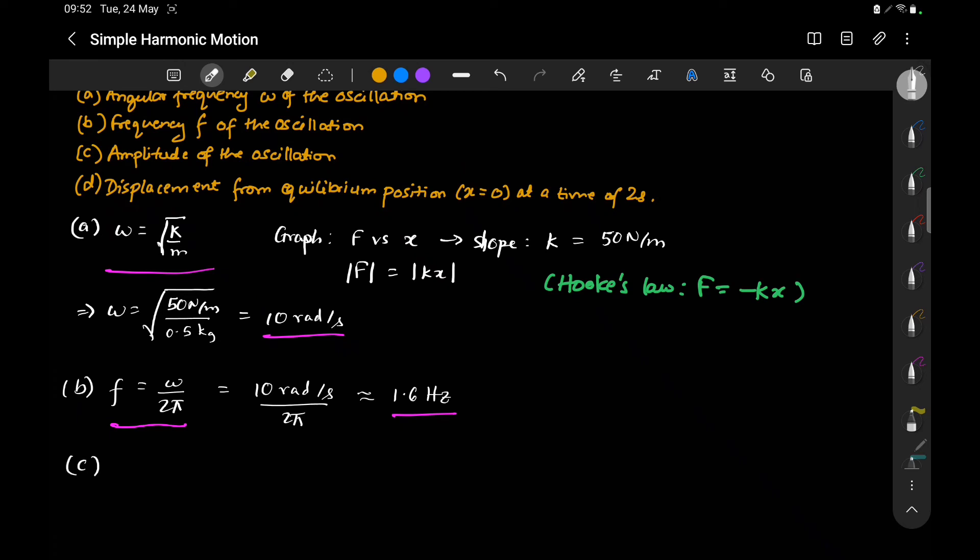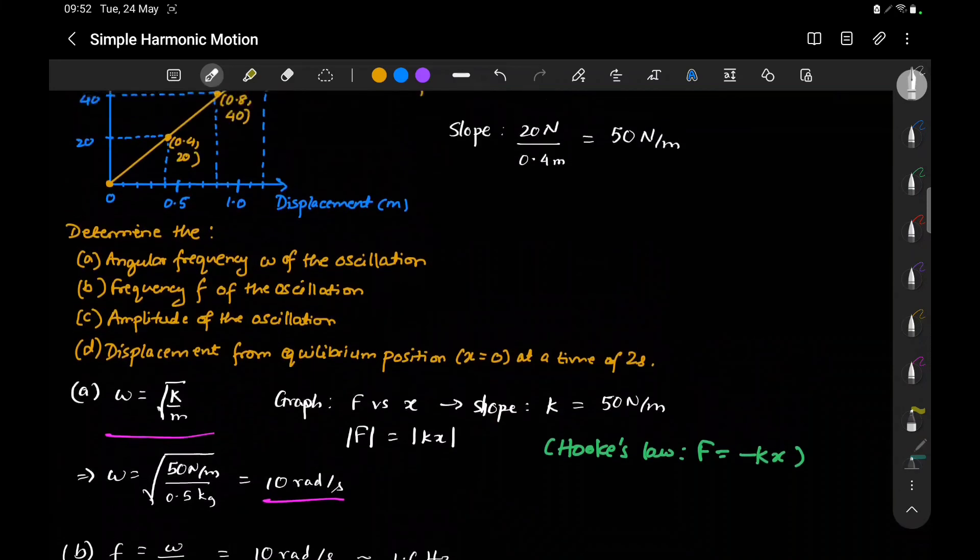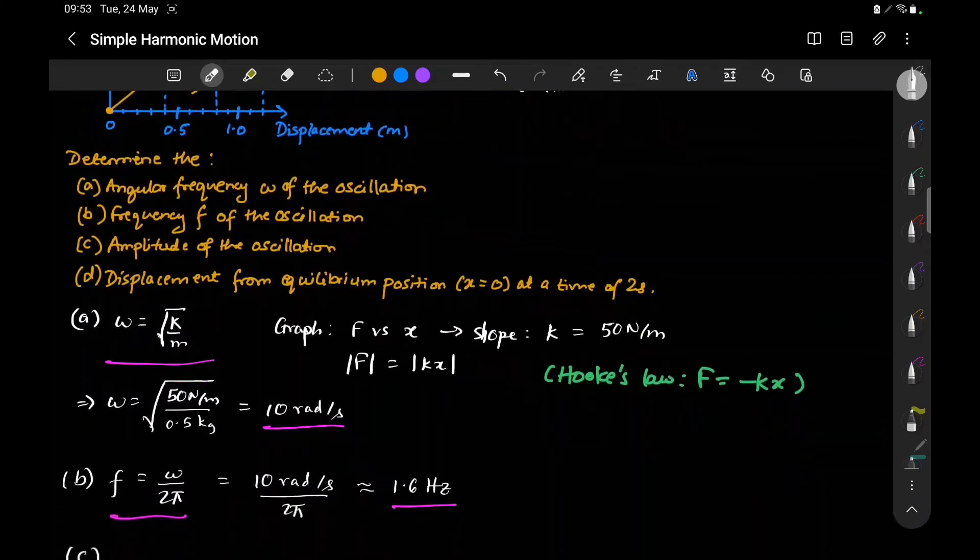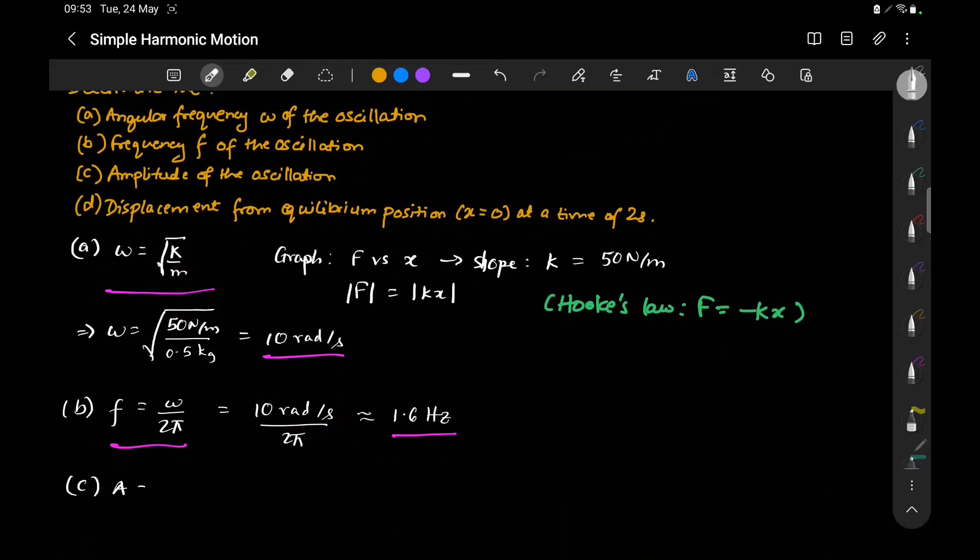The third part asks for amplitude. The last point on the graph corresponds to maximum displacement. Maximum displacement is by definition the amplitude, so A = 1.2 meters.